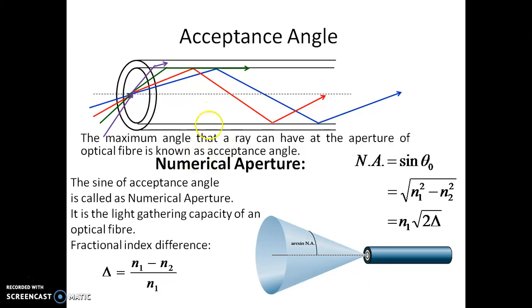This acceptance of light by the optical fiber is given numerically by numerical aperture. It is the sine of the acceptance angle and represents the light gathering capacity of an optical fiber. The formula for numerical aperture is given as sin θ₀.